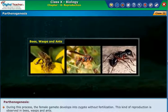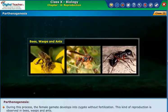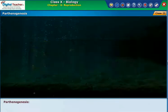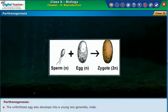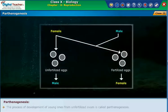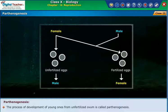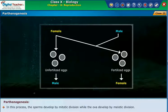During this process, the female gamete develops into a zygote without fertilization. This kind of reproduction is observed in bees, wasps, and ants. The zygote develops from a fertilized egg or by parthenogenesis. The unfertilized egg also develops into a young one, generally male. The process of development of young ones from an unfertilized ovum is called parthenogenesis. In this process, the sperm develop by mitotic division while the ova develop by meiotic division.